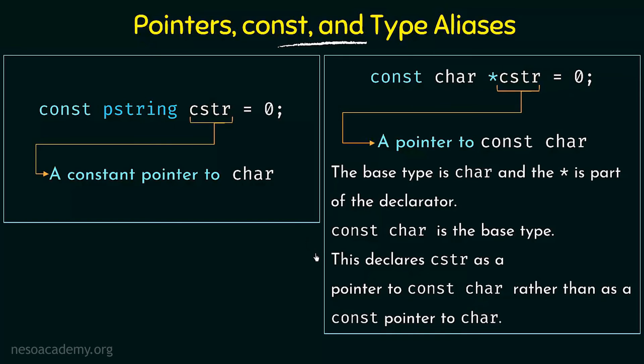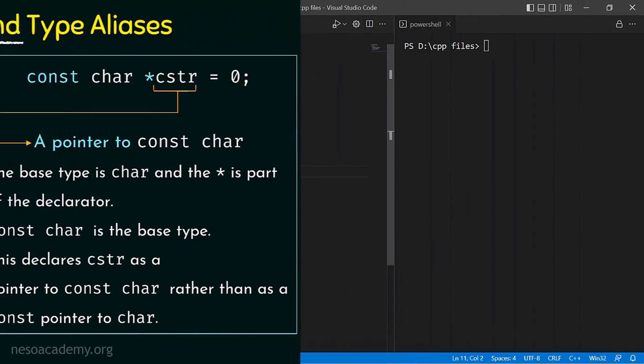I hope you understood what the mismatch is and why this kind of declaration cannot be made once we have used this type alias. Let's go ahead and compile this in Visual Studio Code to see what the compiler tells us.